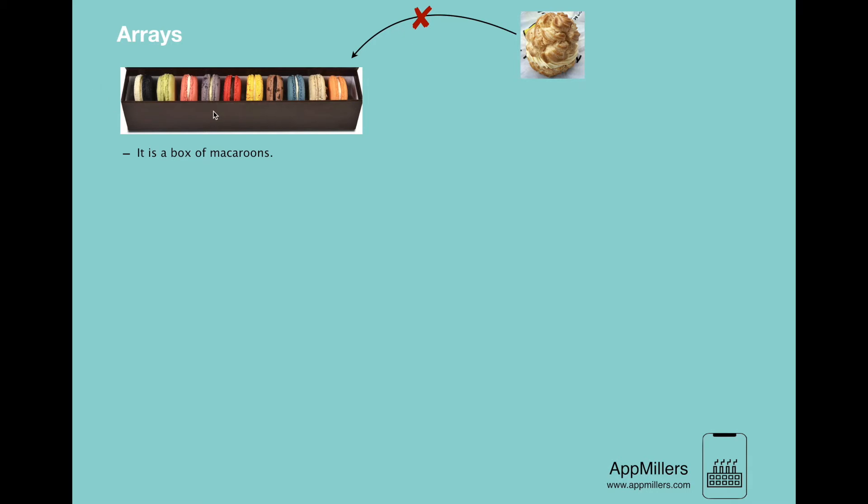The next property is that all macarons in this box are next to each other. There is no gap between them, which means that they are contiguous. The next property is each macarons over here can be identified uniquely based on their location.